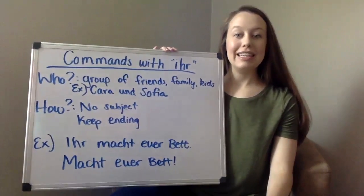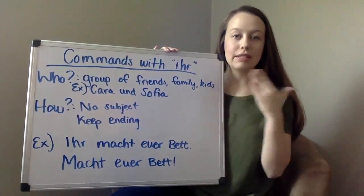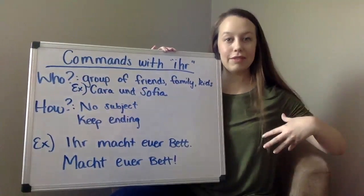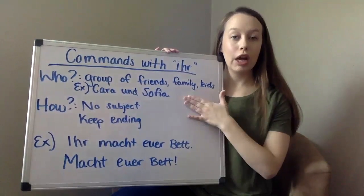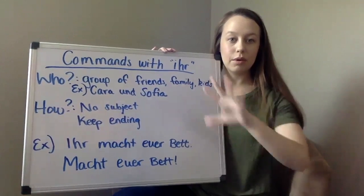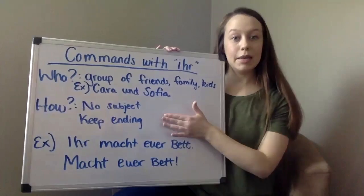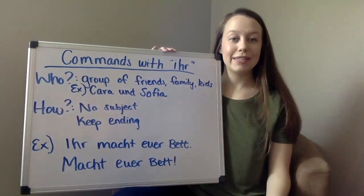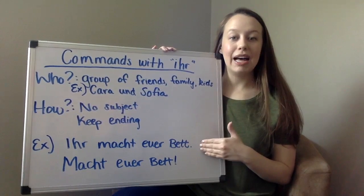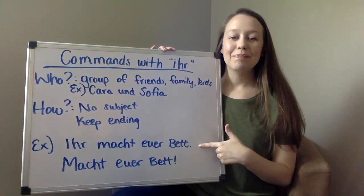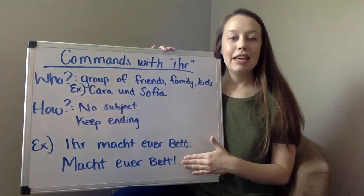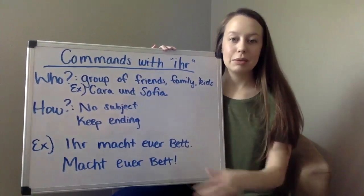Now let's talk about commands with 'ihr.' To review: same people as with 'du' — informal, friends, family, children — but multiples of them, a group. In this case I'm going to command my friend Kara and her sister Sophie. With 'ihr' we have no subject — the 'ihr' drops off — but we actually keep the verb ending. So it looks like a regular sentence without the 'ihr.' Example: 'Ihr macht eure Bett' is the regular sentence; the command is just 'Macht eure Bett.'